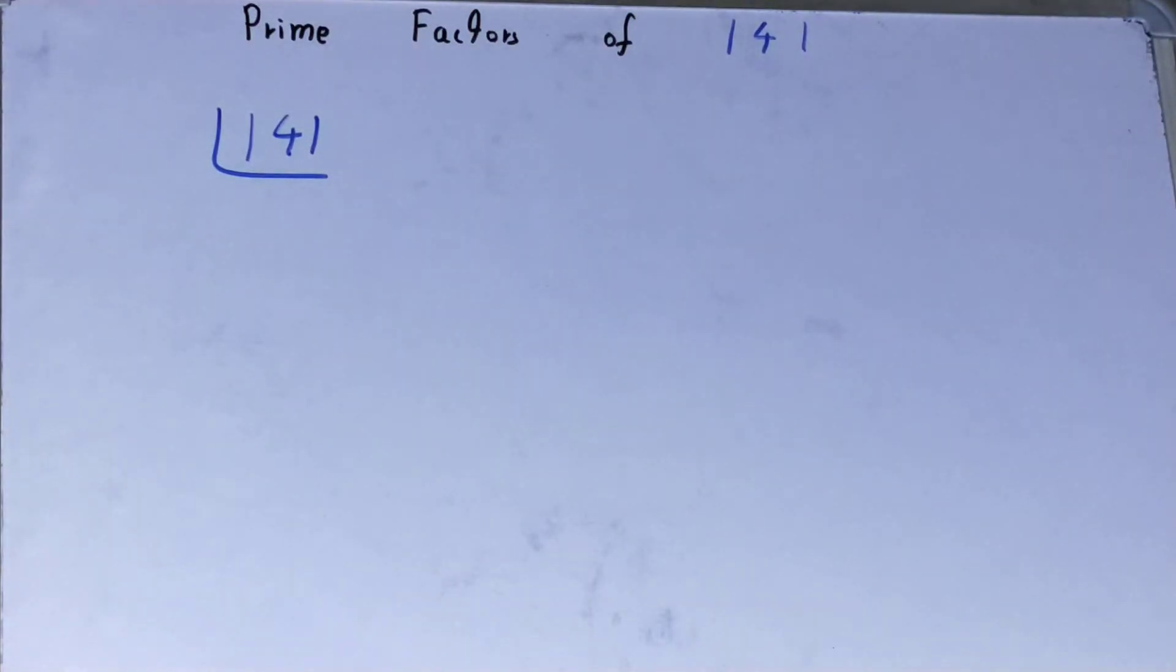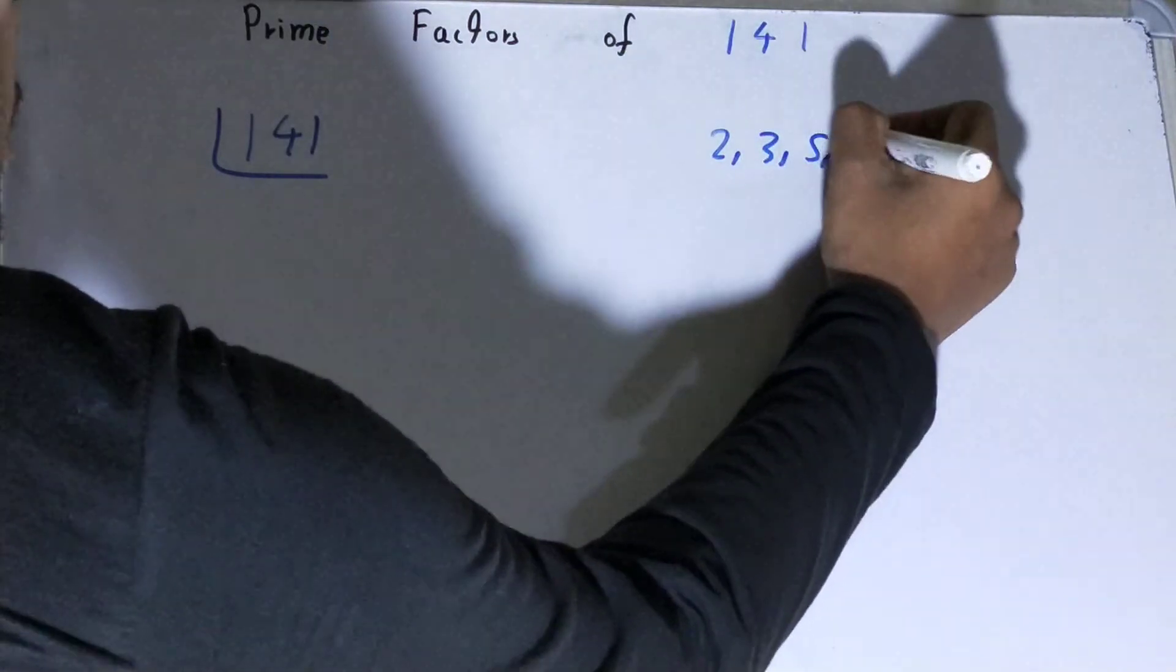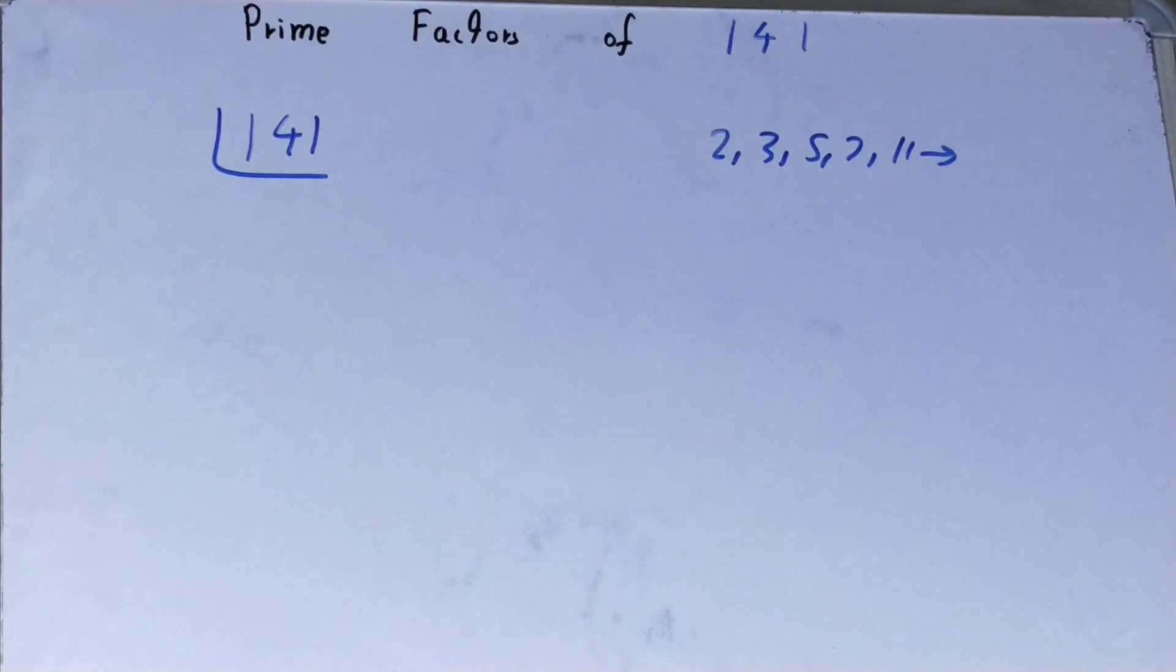Prime numbers are numbers that are divisible by themselves or 1 only, like 2, 3, 5, 7, 11, and so on. We'll start with the lowest prime number that we have, that is 2.